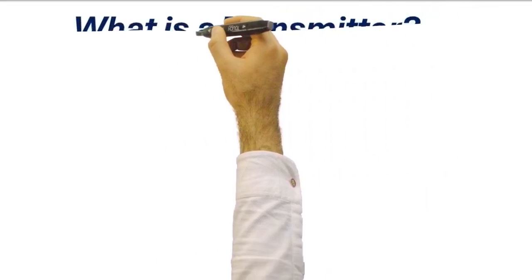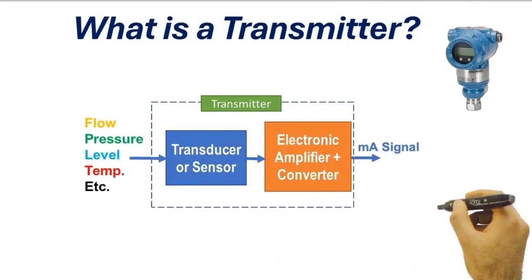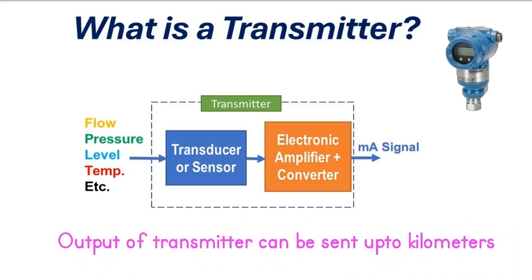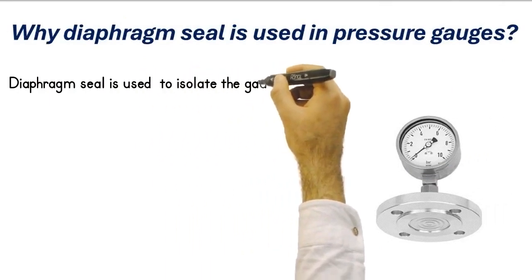What is a transmitter? An instrumentation transmitter is a device that converts the process variable into a standard instrumentation signal, like 4 to 20 milliamperes. The signal produced by the transmitter is proportional to the value of the process variable being measured. This 4 to 20 milliamperes current signal can be transmitted to a control system at a remote location over a two-wire system.